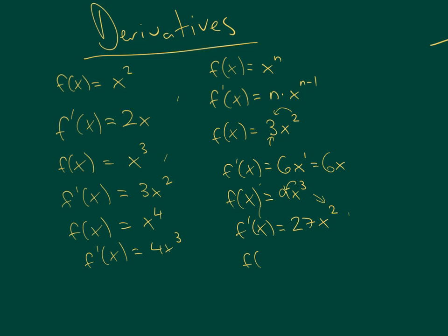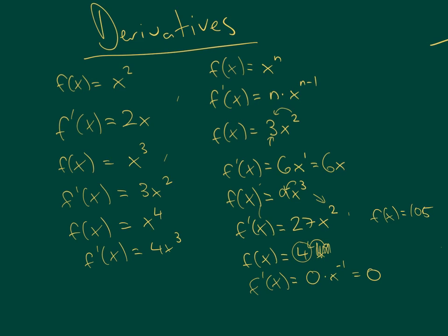And then the last example: what if you have something like f of x equals 4, where you have a constant function? Well, you can think of this as 4x to the 0, because x to the 0 is 1. So if we apply the rule, then f prime of x would equal 0 times 4, which is 0 times x to the negative 1, because 0 minus 1 is negative 1. And 0 times anything equals 0. So anytime you have a constant like 4, the derivative of that constant would be 0.